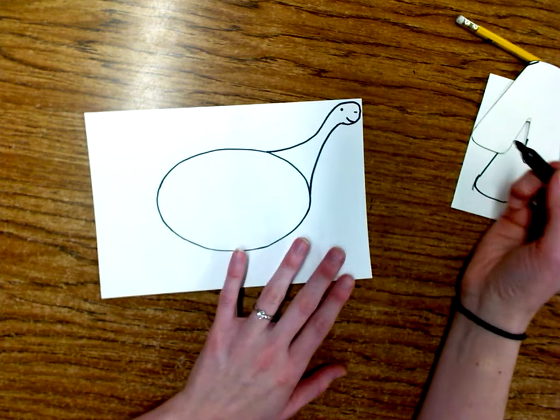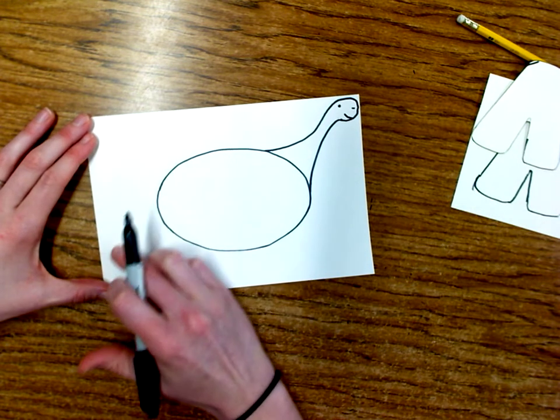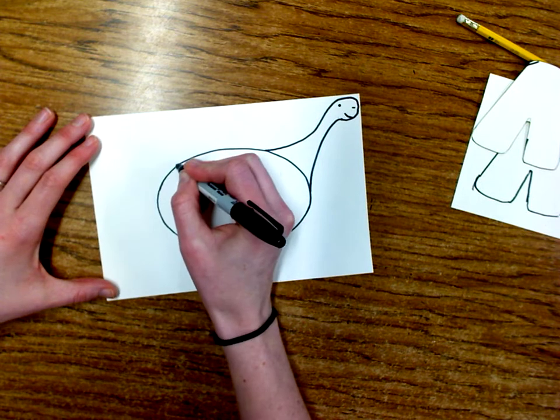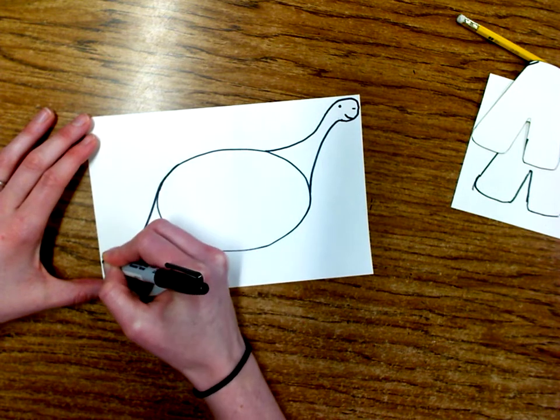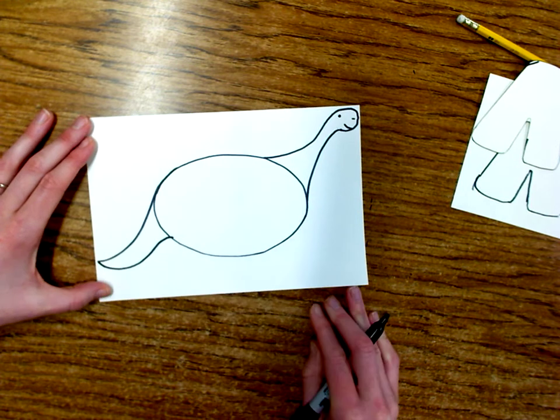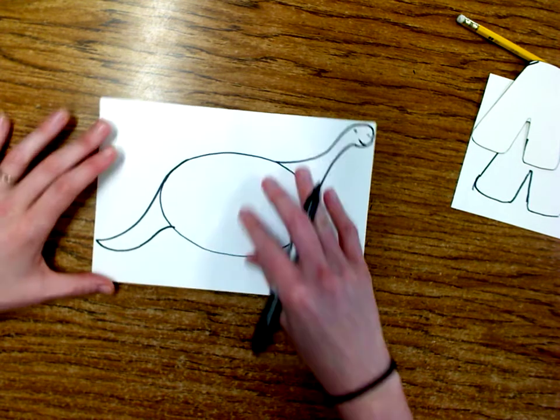And then I'm gonna add a tail too and that's gonna kind of swoop down this way. So I'm gonna go across and then bring it like this and back. Alright, but this looks a little bit too simple so I might add some more details.